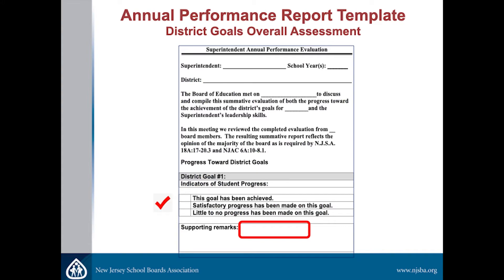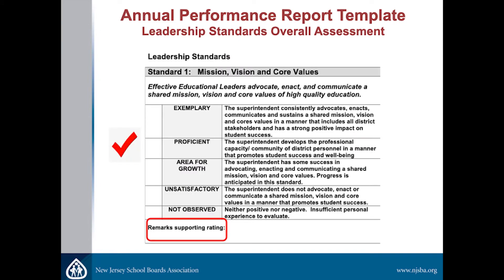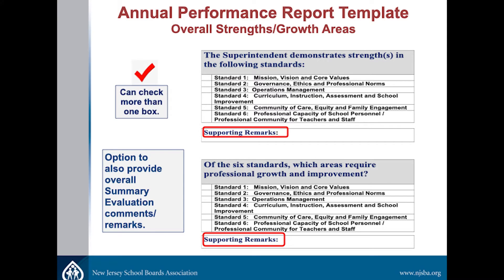This is a copy of what the annual performance report template looks like that New Jersey School Boards makes available to boards. For each one of the goals, it asks you to give an overall rating and provide a comment that reflects the majority opinion. The same is true for each standard — give an overall rating with supporting comments, and then fulfill the requirement of identifying areas of strength and areas where more growth is needed. There are also open-ended boxes for any additional feedback and information that the board would like to give to the superintendent.